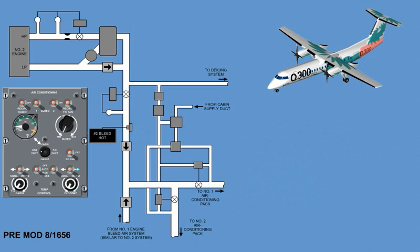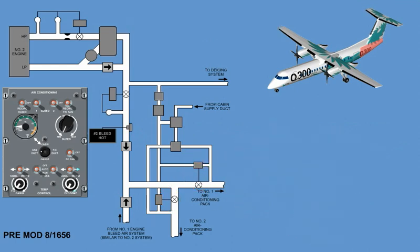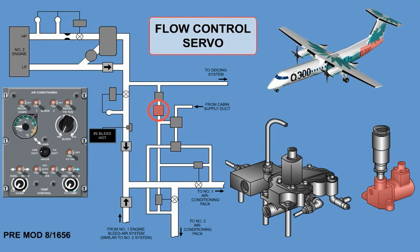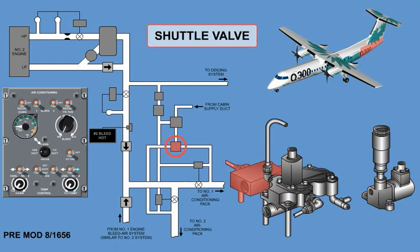Located in the tail of the aircraft are the pressure regulator and shut-off valve. For bleed controlling on pre-model 8/1656 aircraft, there is a flow control servo, a set-down limiter, and the shuttle valve.